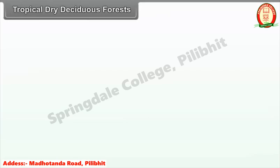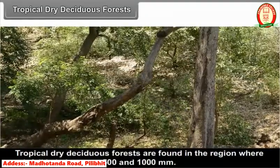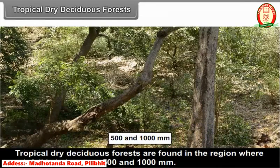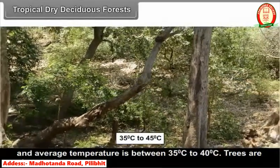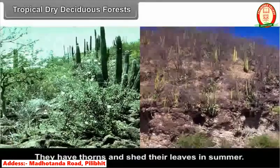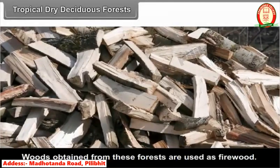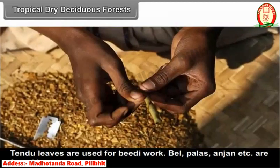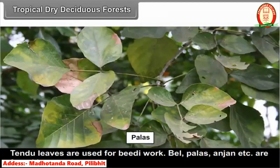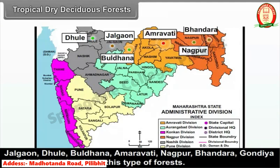Tropical dry deciduous forests are found in regions where rainfall is between 500 and 1000 mm and average temperature is between 35°C and 40°C. Trees are short and sparse, have thorns, and shed their leaves in summer. Woods obtained from these forests are used as firewood. Tendu leaves are used for bidi work. Bell, Palas, and Anjan are found here. Yavatmal, Dhule, Buldhana, Amravati, Nagpur, Bhandara, Gondiya, and Akola districts have this type of forest.